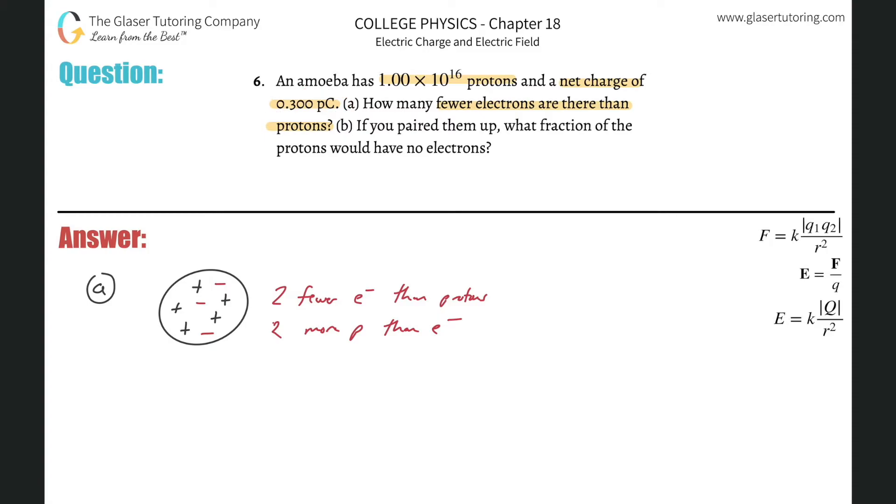All right. So let's do that conversion. So I'll do it over here. So 0.300 picocoulombs. So picocoulomb on the bottom, coulomb on the top, 10 to the 12th picocoulombs for every one coulomb. I had to do that because I realized that there's 1.6 times 10 to the negative 19 coulombs of charge for every one proton. So there's going to be 0.3 divided by 10 raised to the 12th times 1.6 times 10 to the minus 19.